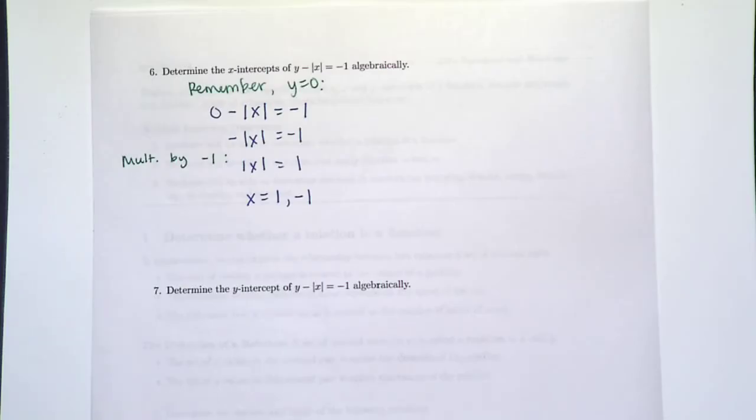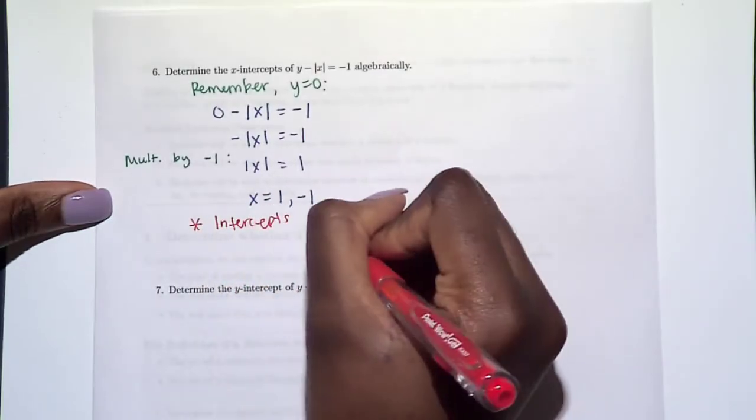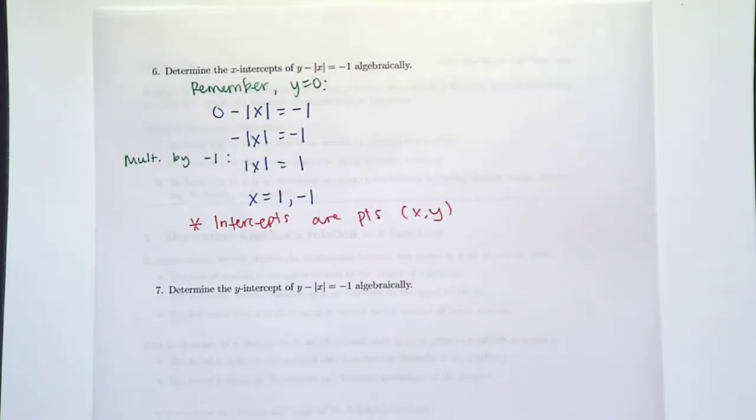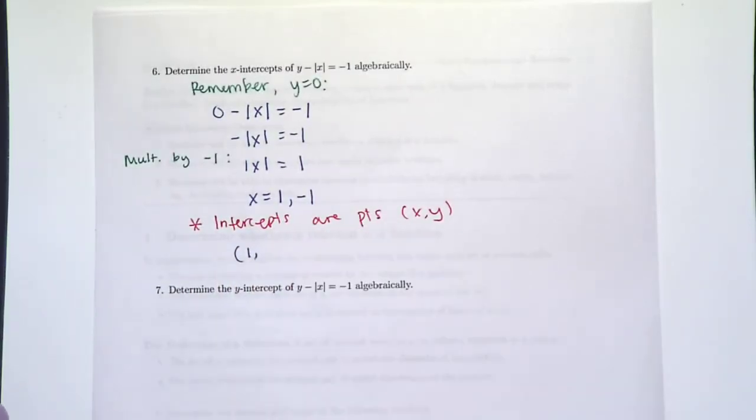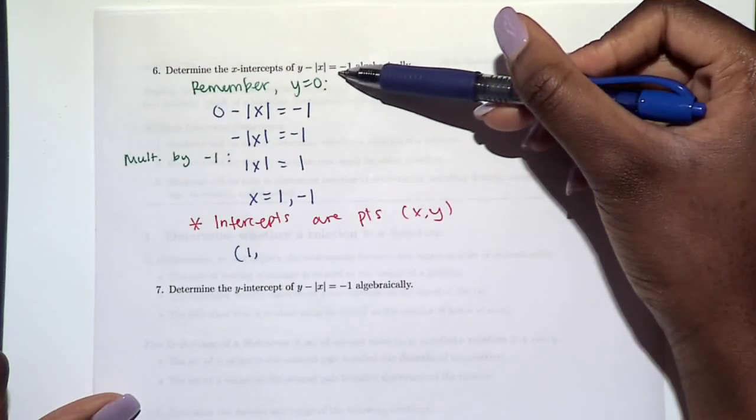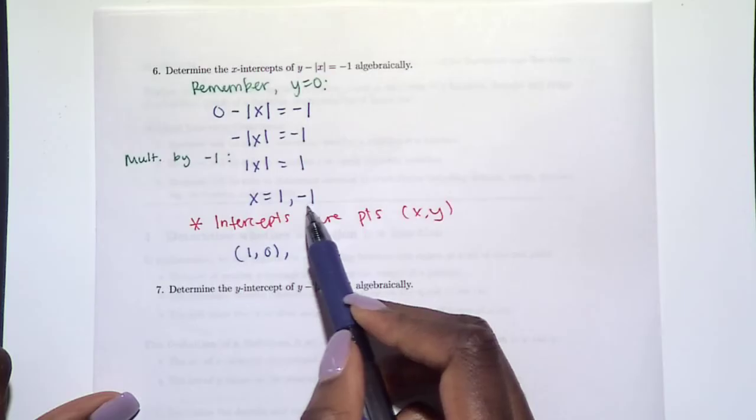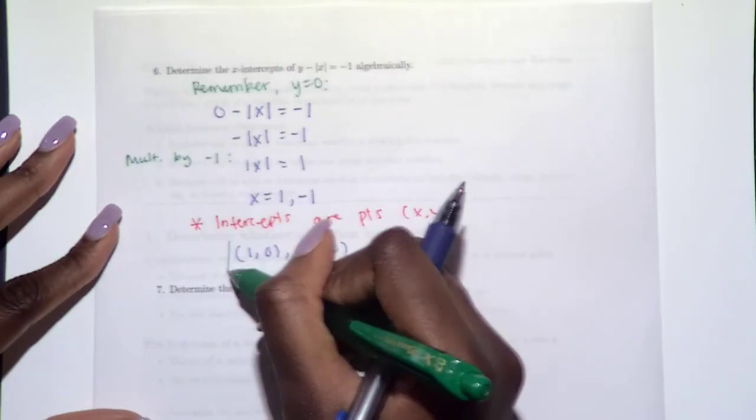So to answer this question, we are not done. x = 1 and x = -1 is not an intercept because intercepts are points (x, y). So we need (x, y) to answer our question. So x value 1 goes with what y value? The zero. And x value -1, y has to be zero if it's an x-intercept. So these are our two answers: (1, 0) and (-1, 0).